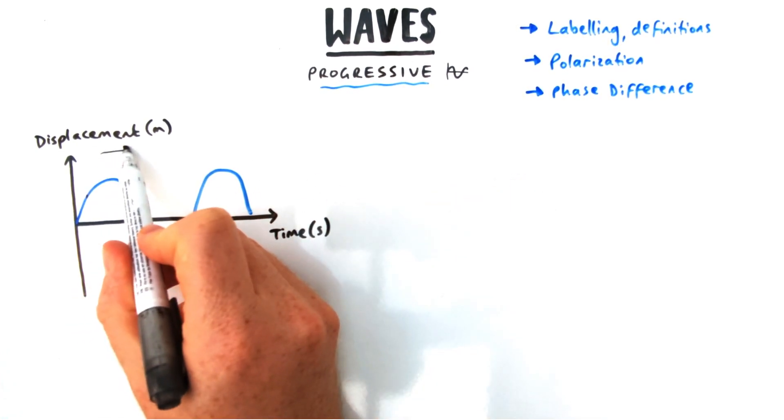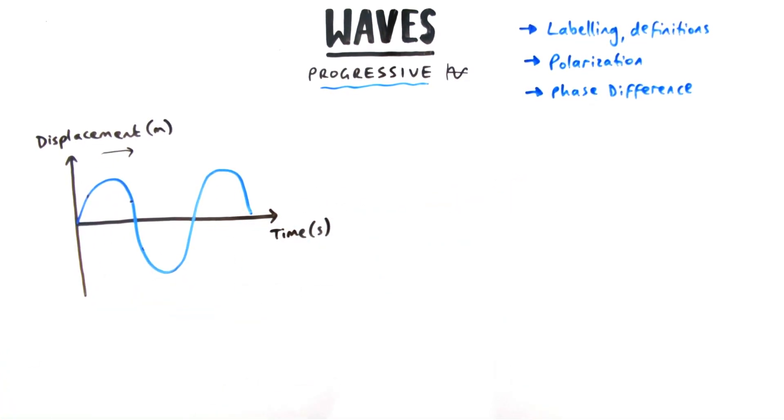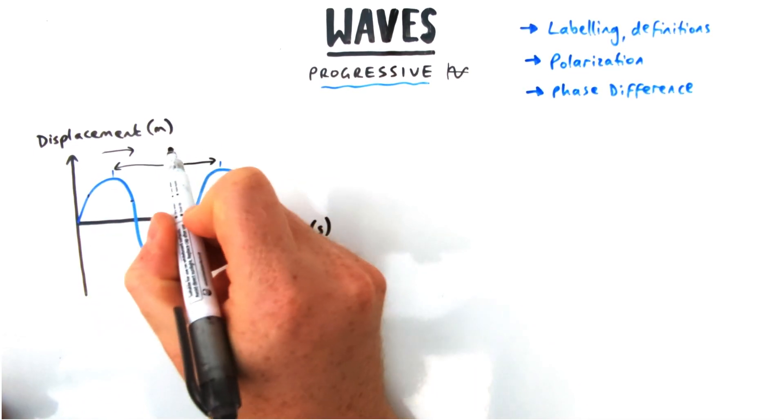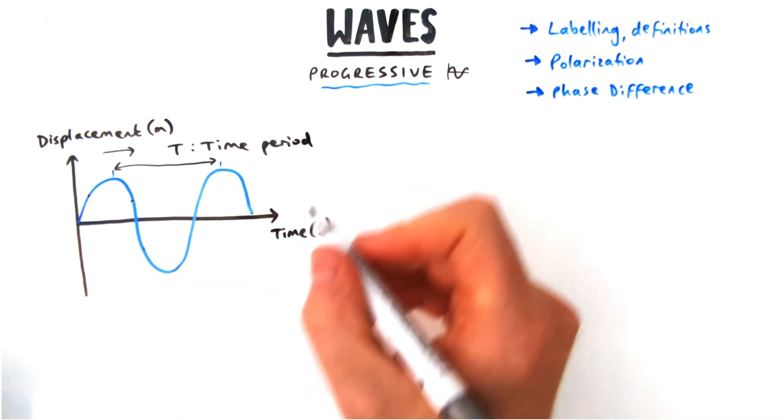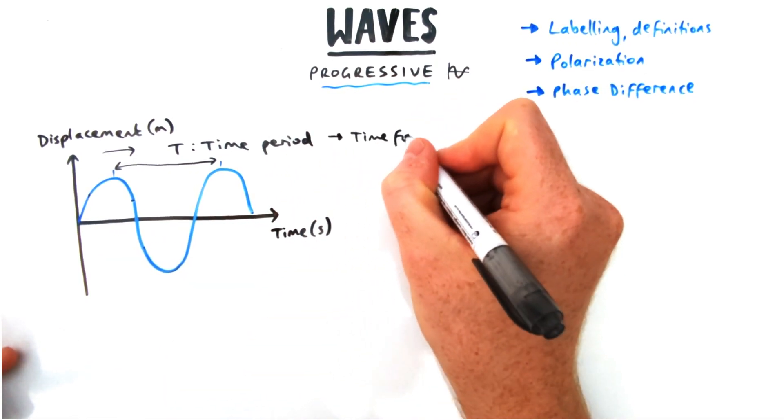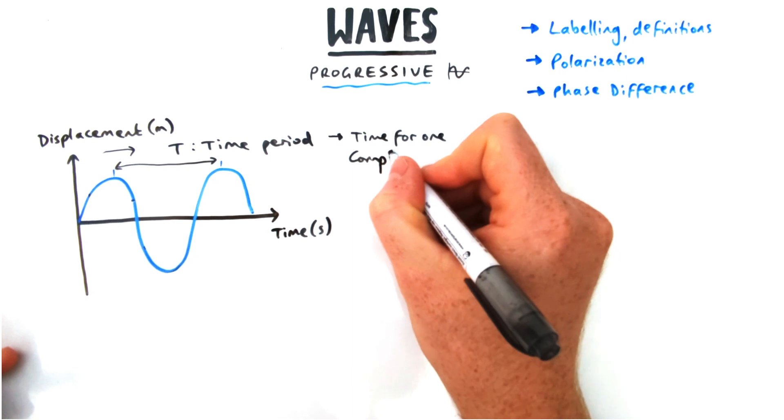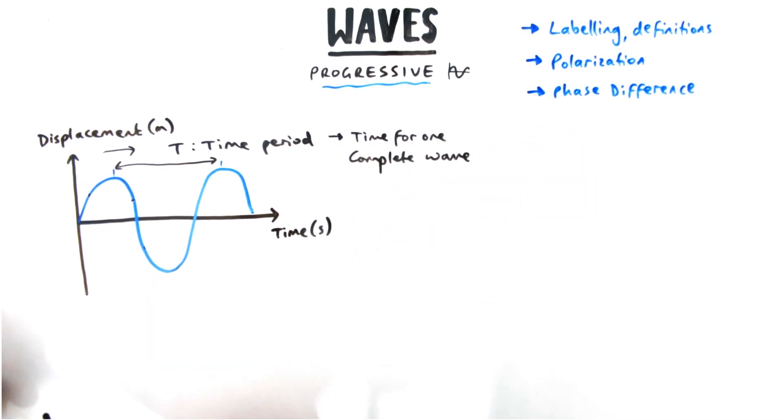First thing is to draw out a wave and start to label it. It's going from left to right, so all points on the wave will oscillate up and down and the wave will travel left to right. If my x-axis is time, that means the distance between one peak to another is known as the time period. The time period can be defined as the time for one complete wave or one complete cycle.